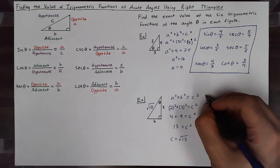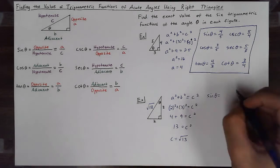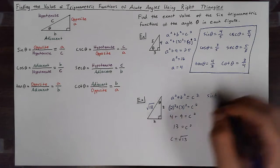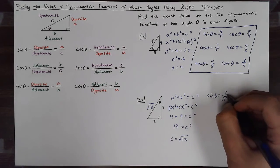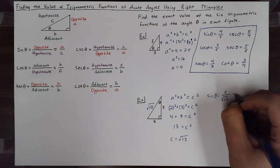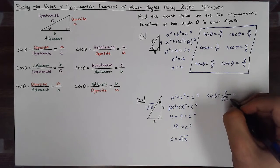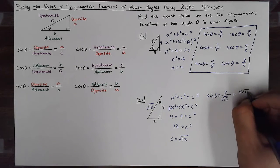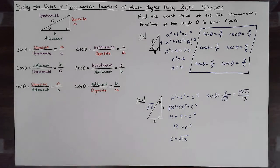Now I know my hypotenuse, so I'll go through. Sine of theta will equal opposite over hypotenuse, so three over the square root of 13. I want to rationalize my denominator, so I'll multiply the numerator and the denominator by the square root of 13, giving me three square roots of 13 over 13.